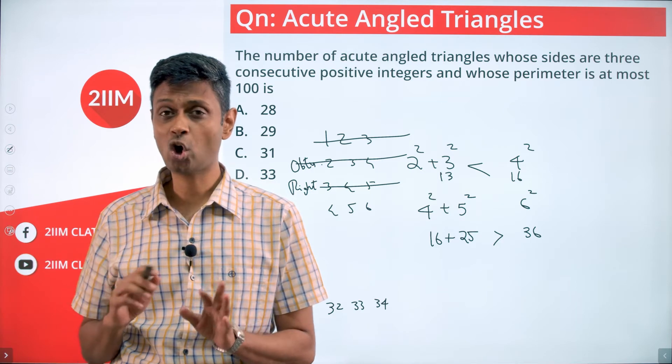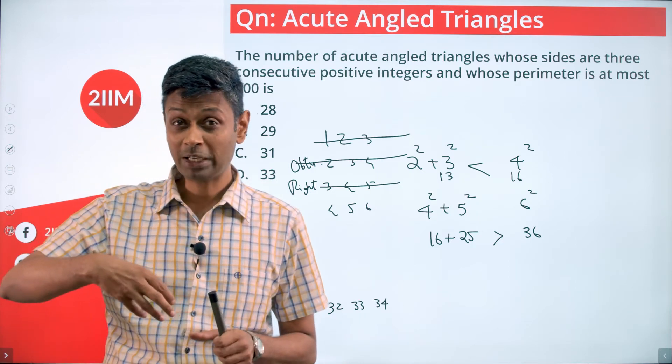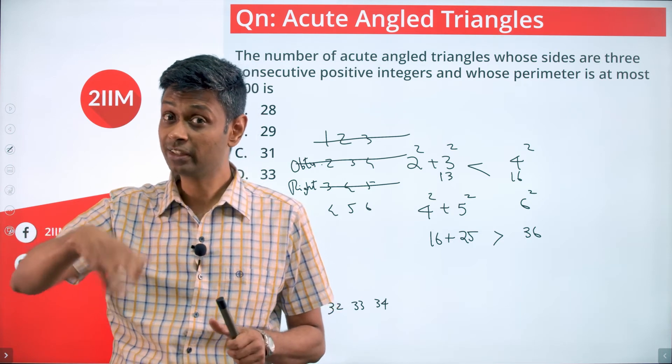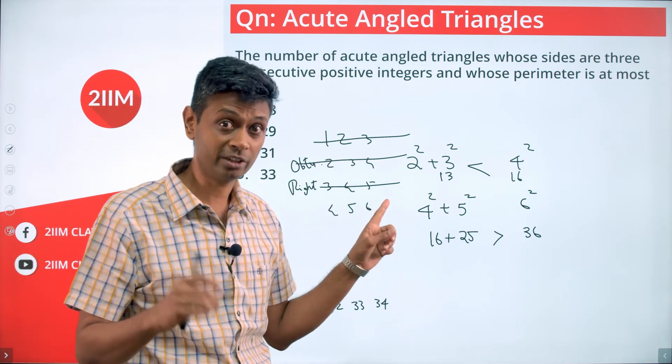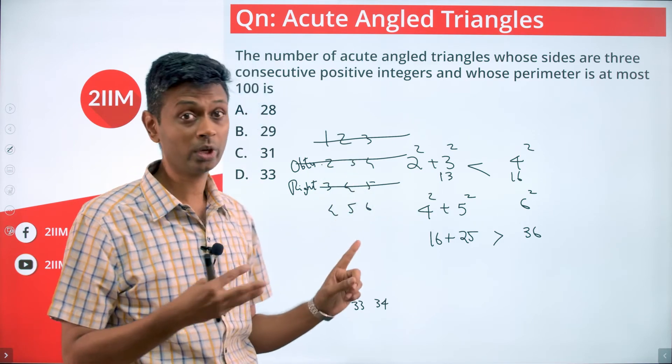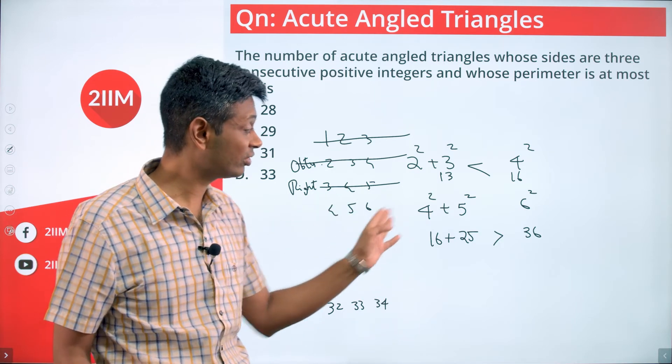All of these have this property. When the numbers become larger, squares become increasingly larger. 1² + 2² is much less than 3². 2² + 3² less than 4². 3, 4, 5 it becomes equal. At 4, 5, 6 this is greater. After that will be greater.